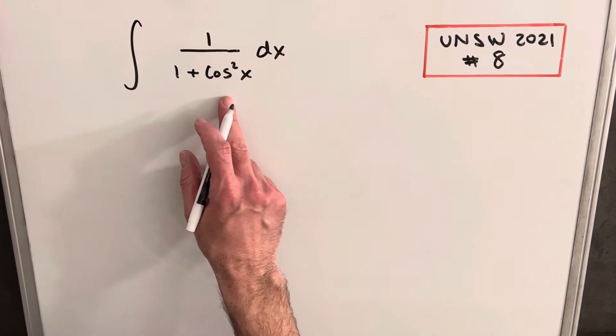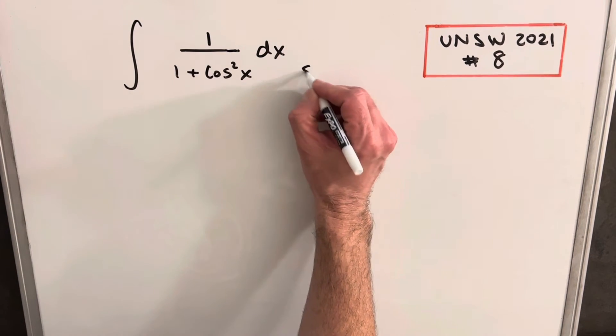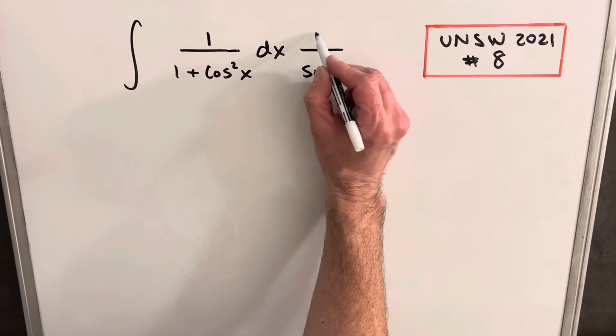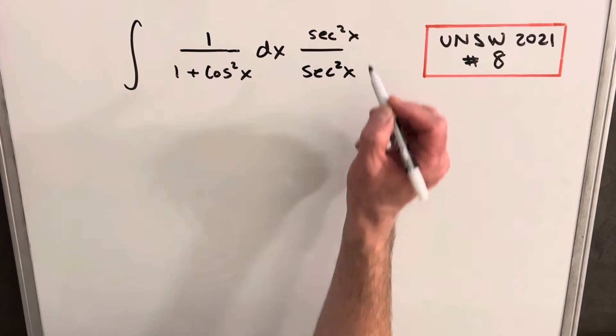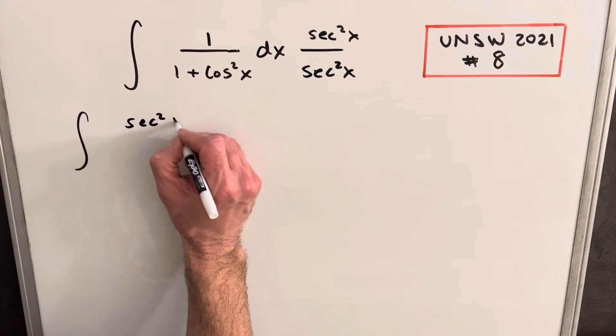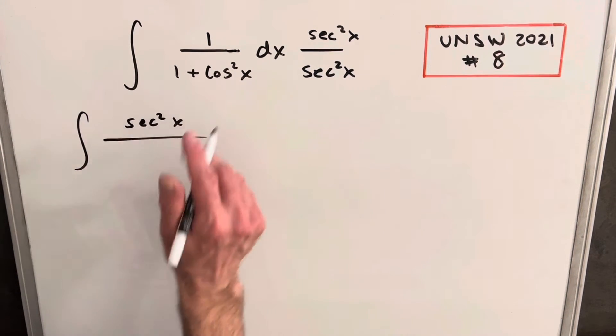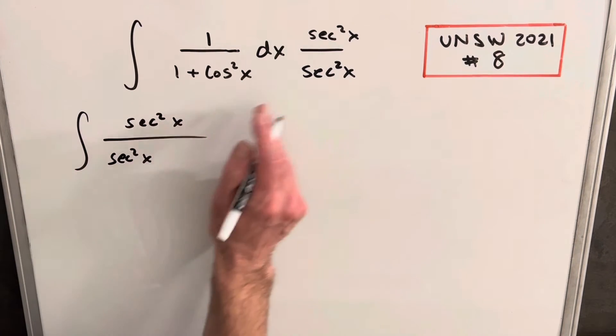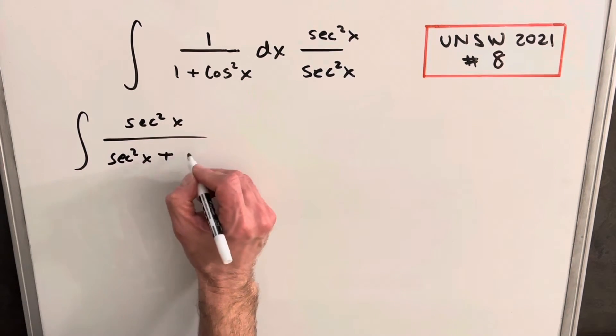So dividing through by cosine squared here is going to be the same thing as multiplying by secant squared x. And we'll just need to do the same thing in the numerator. So let's see what happens when we do that. In the numerator, we're going to have secant squared x. Then the denominator, we're going to have secant squared x times one, secant squared x. And then this is going to cancel with cosine squared x. We're just going to have a one here.